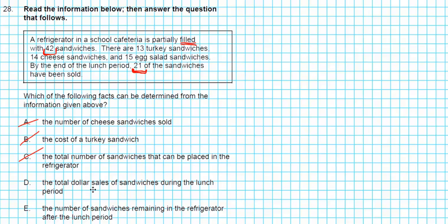Option D, the total dollar sales of sandwiches during the lunch period. Again, what are we provided here? These are quantitative values. There's no mention of cost. So option D cannot be determined. Based on method of elimination, our correct answer should be E. But we have to make sure we can just assume.